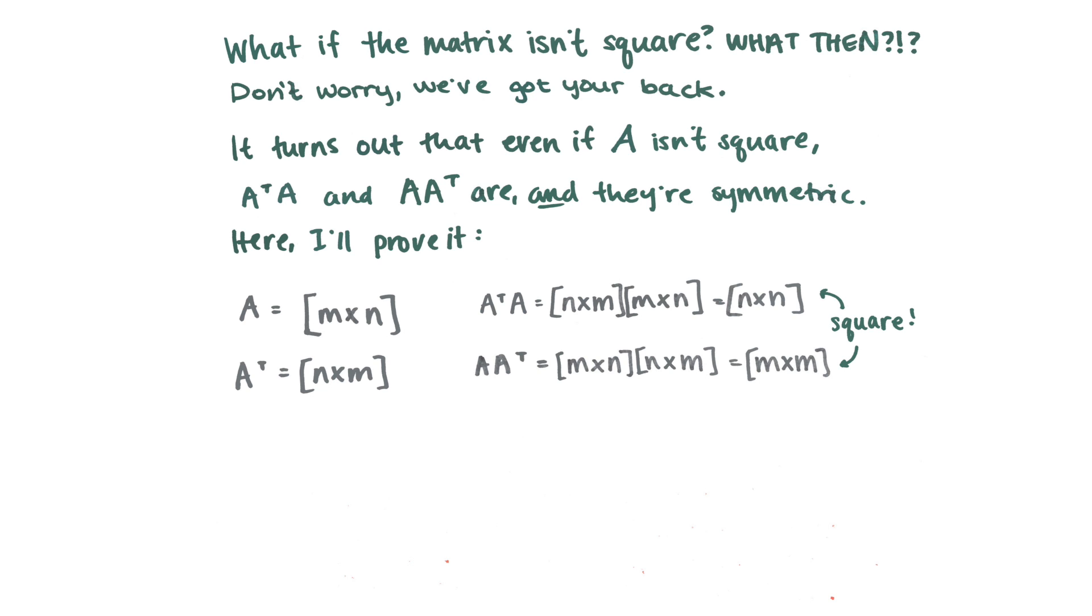So here we have A, it's M by N, and A transpose, which is N by M. And if you multiply A transpose times A, you end up with an N by N matrix. And if you multiply A times A transpose, you have an M by M matrix, and those are both square. And you can try an example if you don't believe me, still.